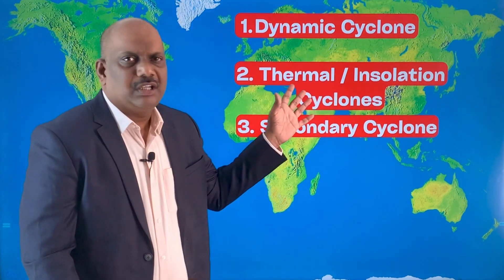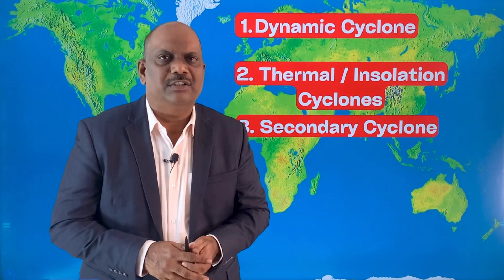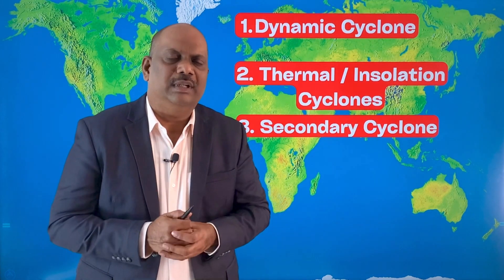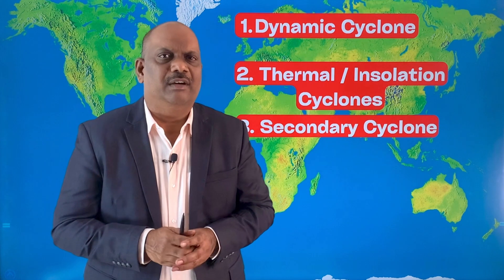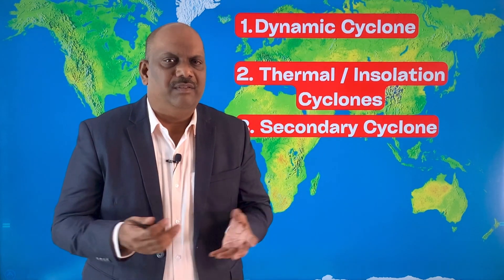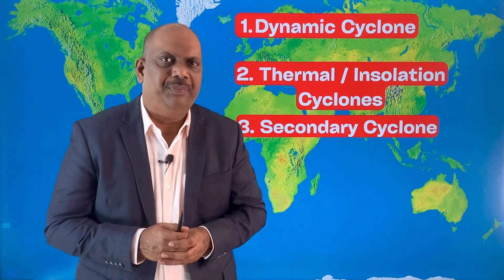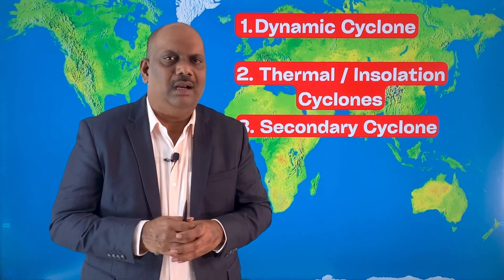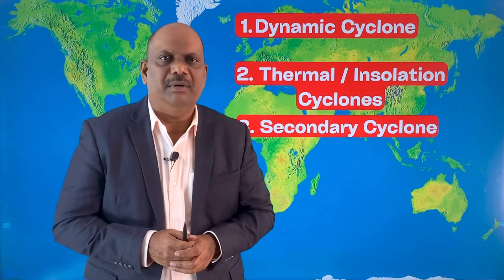Thermal or insolation cyclones develop in the temperate region because of the heating of the earth's surface. They develop over continents during summer and over seas during winter. During winter, when sea water still remains warm while the surrounding land becomes very cold, this may create insolation cyclones in the temperate regions.